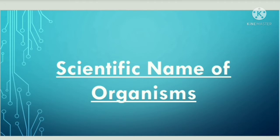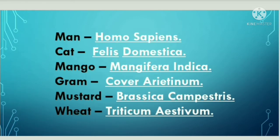Some of these were asked by HSSC in the year 2021 and some may be asked in upcoming exams, so watch this video completely. Let's start: the scientific name of man is Homo sapiens — this was asked by HSSC in previous year exams. Scientific name of cat is Felis domestica — this was asked in the Commando exam held in the year 2021. Scientific name of mango is Mangifera indica. Scientific name of gram is Cicer arietinum.